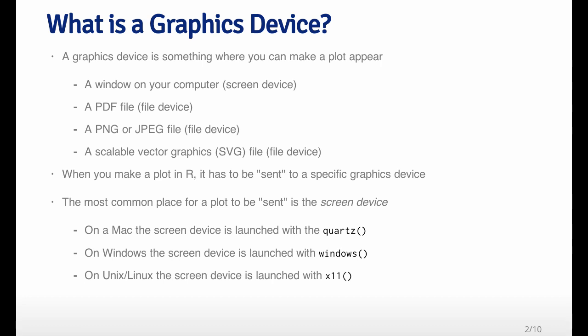Other places where you might want to send a plot include files, and files come in a variety of formats. You can have a PDF file, a PNG file, a JPEG file, or a Scalable Vector Graphics SVG file. There are a lot of different file devices to choose from, and you can send a plot to those files. Anytime you make a plot in R, it has to be sent to a specific graphics device, otherwise there's no way for it to be generated.